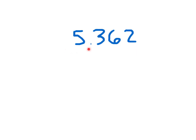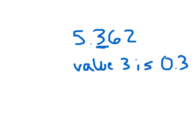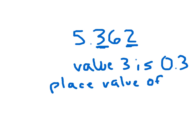Reading this number: this is five and three hundred sixty-two thousandths. The value of the three — the value of the three is three-tenths. The place value of the two is in the thousandths place. What digit is in the tenths place? Right, that three. What digit is in the hundredths place? The six, right.